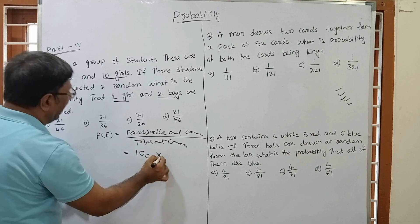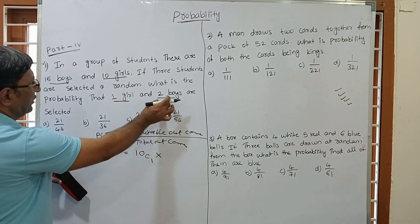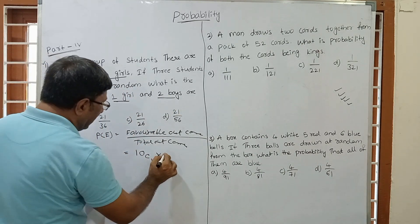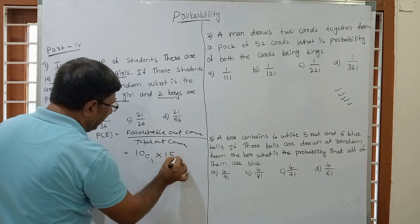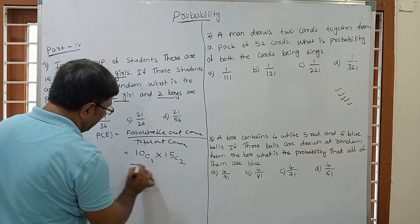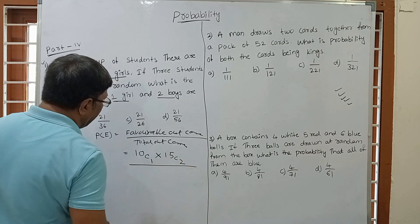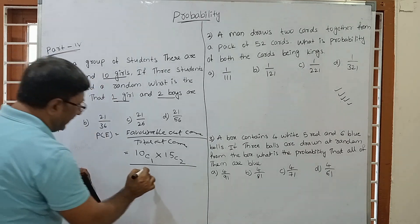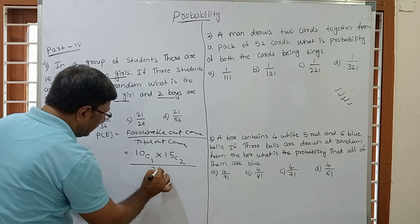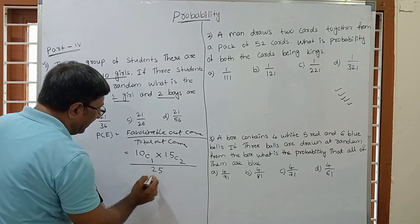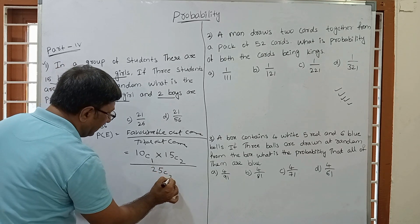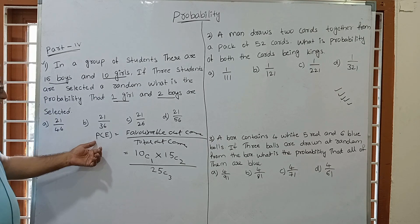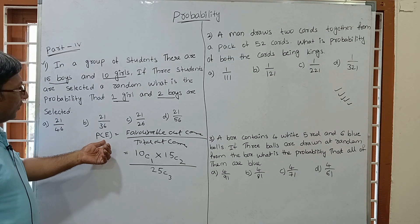We multiply by 15C2 for 2 boys from 15 boys. And the total is 25 students choosing 3, so this is 25C3. So the probability = (10C1 × 15C2) / 25C3.